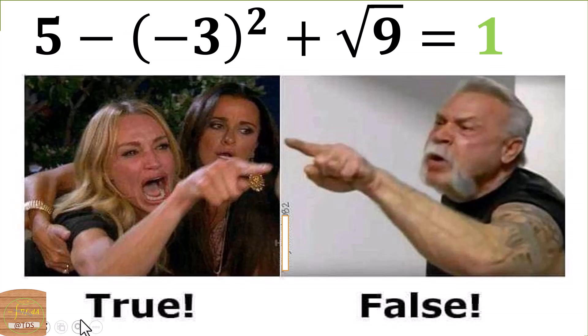We are going to solve this. First of all, let's look at what is inside the brackets here. We have negative 3 squared, and negative 3 squared will give us positive 9.